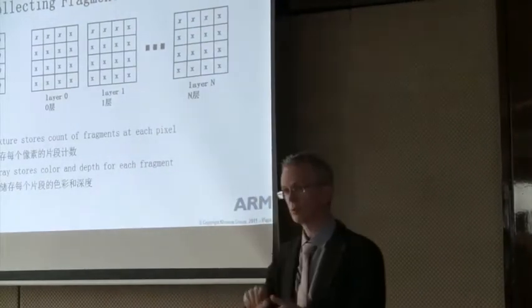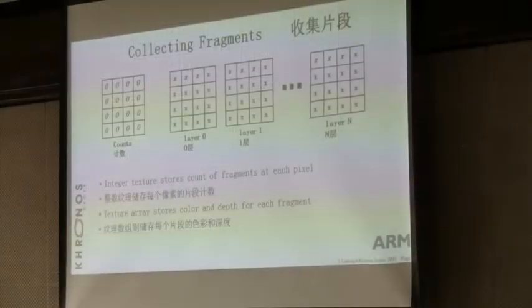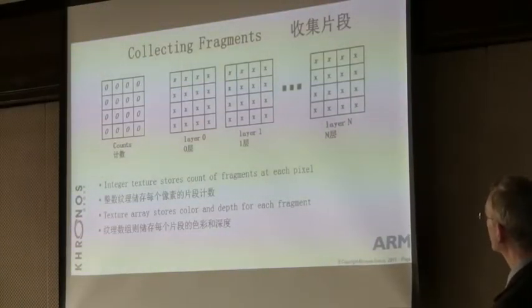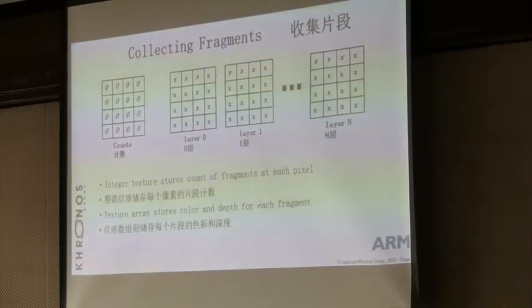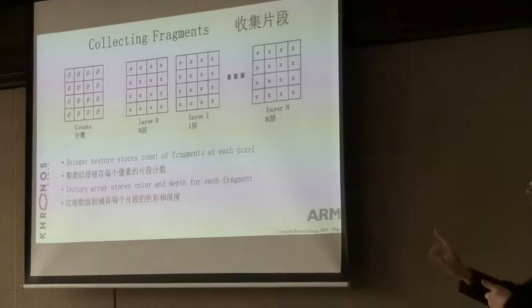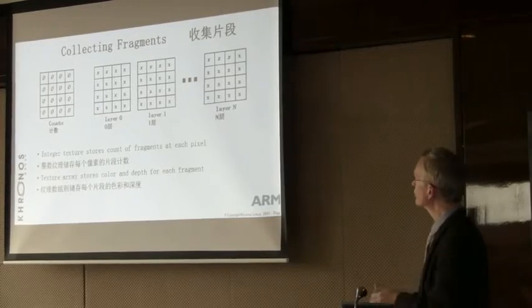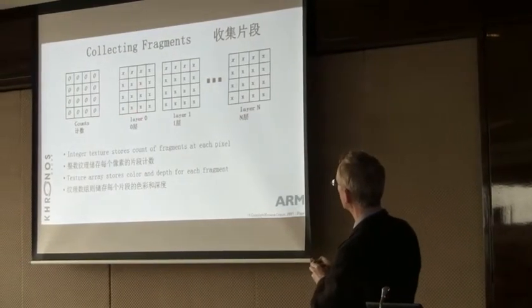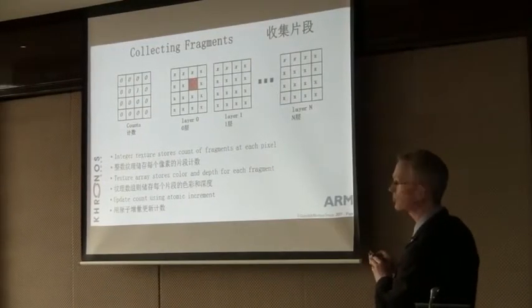Suppose the application draws a small triangle that covers a pixel. The fragment shader for that pixel will atomically increment the count. When it does this, the fragment shader receives zero, but the number changes to one instantly. So the fragment shader knows it can store its color and depth in layer zero, because it returned zero from the count. The number changes to one, and the color and depth are stored there.